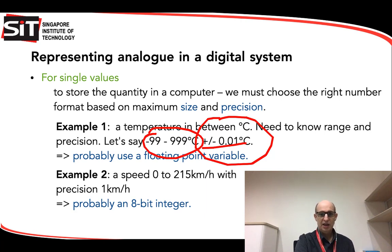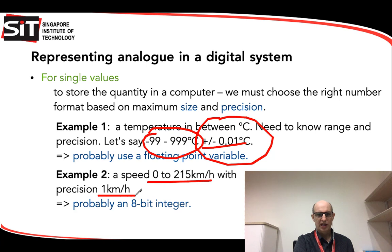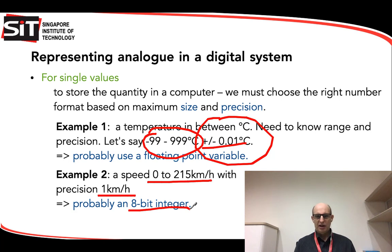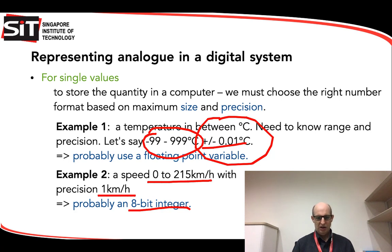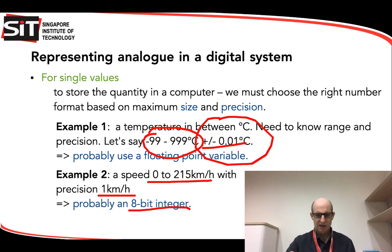The second example is speed — it's all positive, you can't really have a negative speed, and the precision is 1 km/h. You could just use an 8-bit integer. An 8-bit integer in unsigned format can count from 0 all the way up to 511, which is plenty of range for the sort of speed you're talking about. So that's what the designer — the person who designs the software to handle some real-world value — needs to think about: what's the range of the value, and what's its precision?